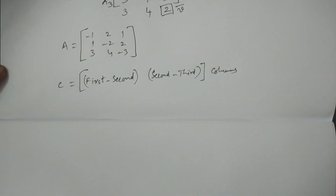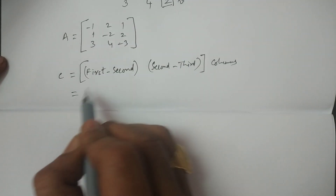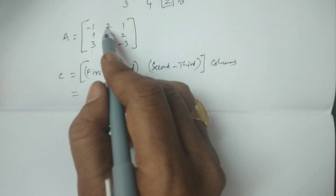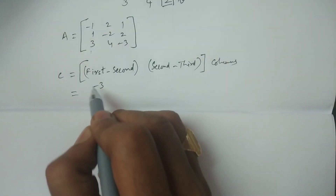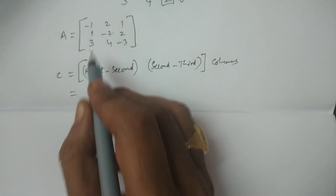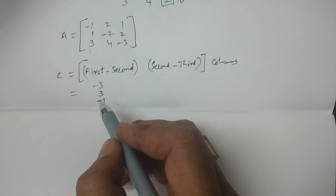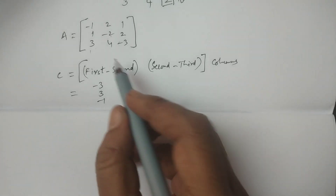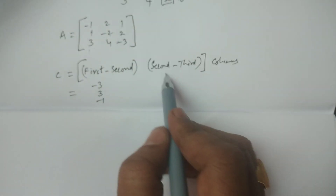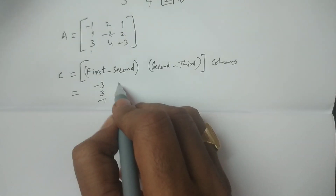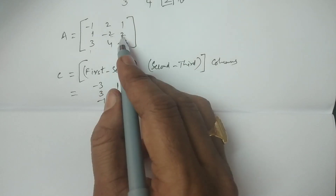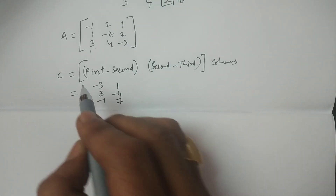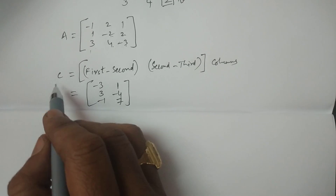For first column minus second column: minus one minus two is minus three; one minus of minus two is three; three minus four is minus one. For second column minus third column: two minus one is one; minus two minus of minus two is minus four; four minus of minus three is seven. This gives the new column matrix C.